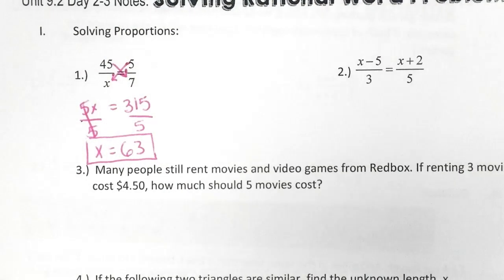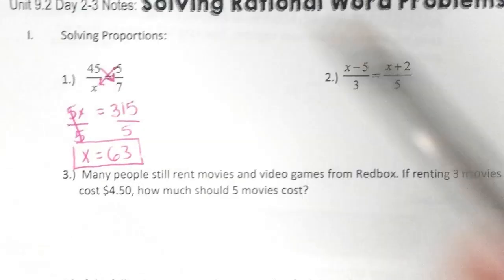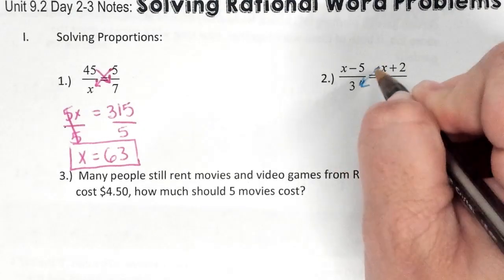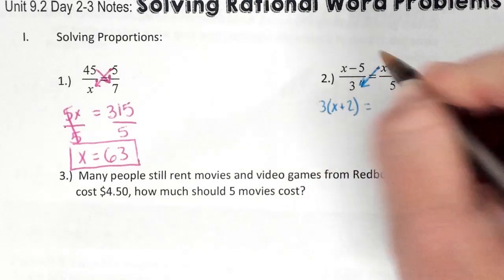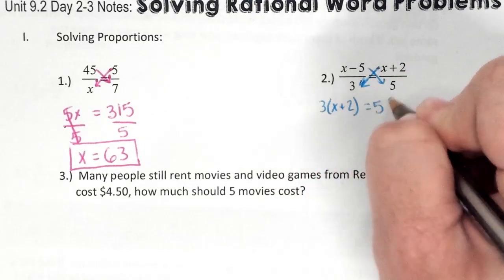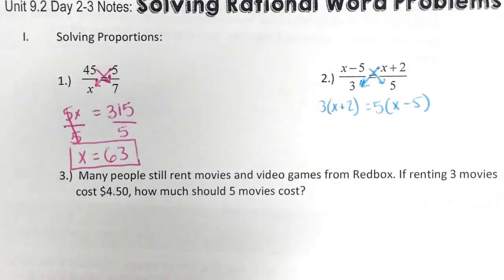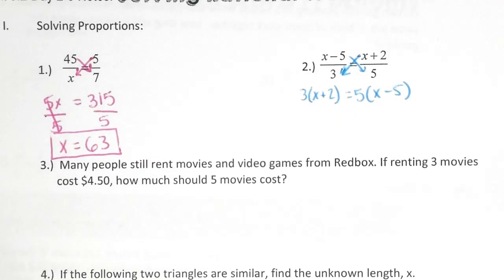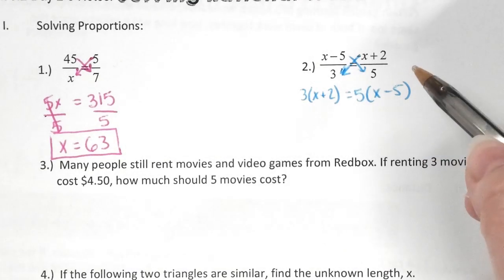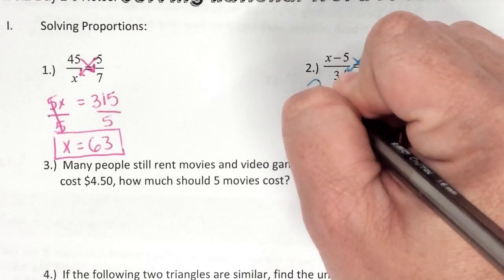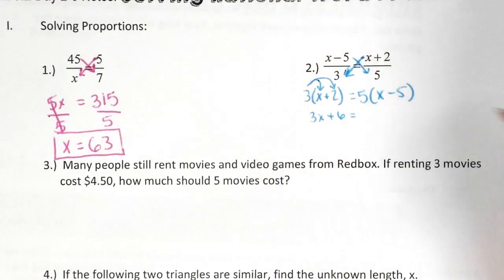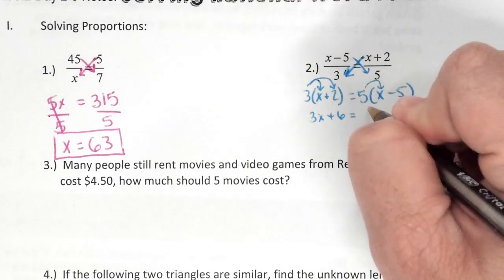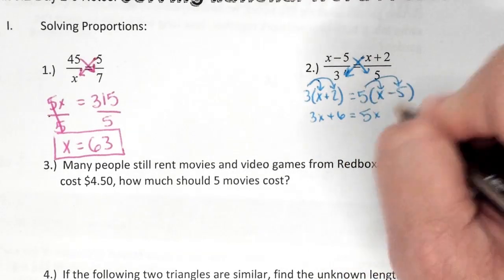Okay, so same thing on number two. We're going to cross multiply, but because there's a binomial, we're going to set it up as distribution. Now what? I already cross multiplied. Distribute. So 3 times x is 3x, 3 times 2 is 6. Bring down your equal sign. 5 times x is 5x, 5 times negative 5 is negative 25.